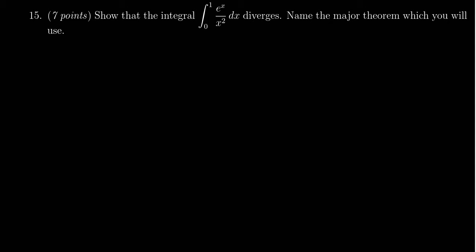In this video, let's discuss the solution to question 15 from the practice midterm exam for Calculus 2, Math 1220. We're asked to show that the integral from 0 to 1 of e to the x over x squared dx diverges.